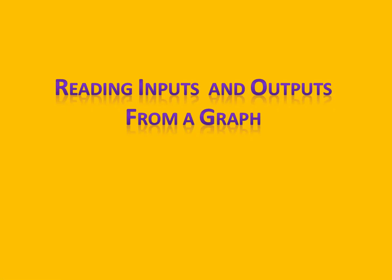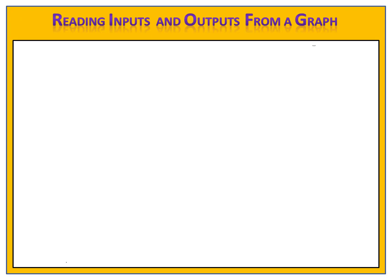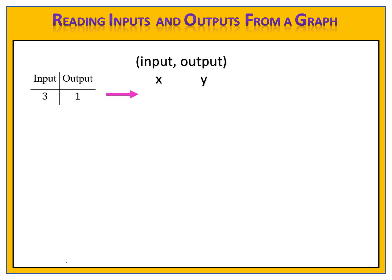In this lesson we're going to learn about reading inputs and outputs from a graph. Let's begin by talking about what we know. We know that if we have an input and an output, we can write that as an ordered pair, where we have the input first and the output second. The input is x, and the output is y.